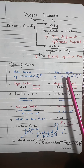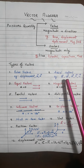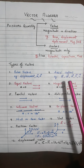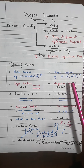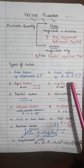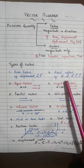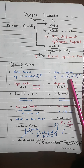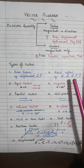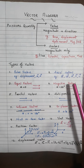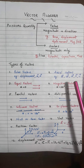Axial vectors are vectors acting along the axis — they belong to circular or rotational motion. Examples include angular displacement, angular velocity, angular acceleration, torque, and angular momentum. In short, physical quantities in circular motion are axial vectors.